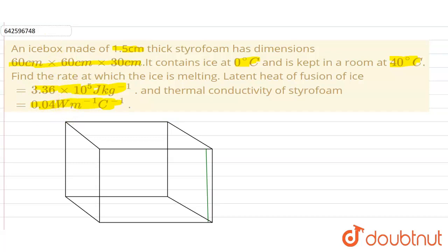In the given question we have been given that the ice box contains ice at zero degree Celsius. Let us suppose this is the ice box which contains ice at zero degree Celsius. Now the wall of this ice box is 1.5 centimeter thick, so this thickness of the wall is given as 1.5 centimeter, so this thickness t is 1.5 centimeter.